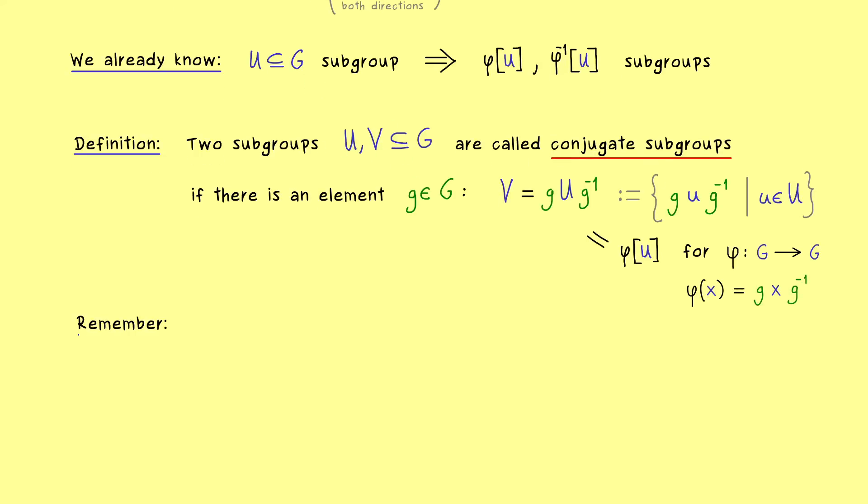Moreover it's not hard to show that besides the symmetric property we also have a reflexive property and a transitive one. And with that you can already see that the term conjugate subgroup defines a whole equivalence relation on the set of subgroups of G.